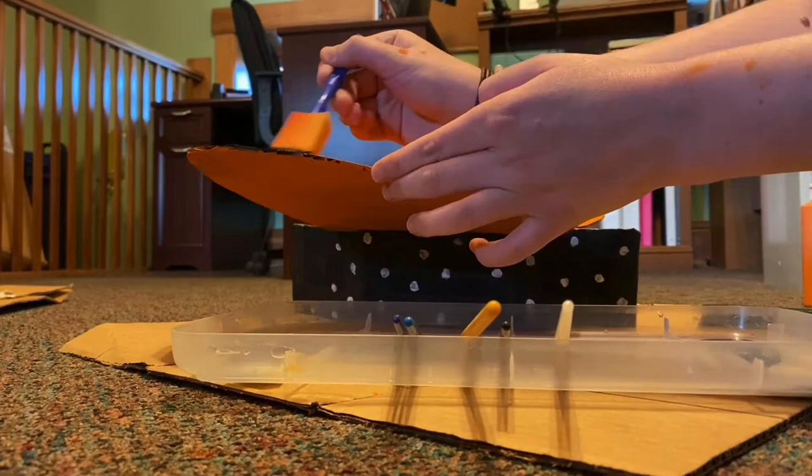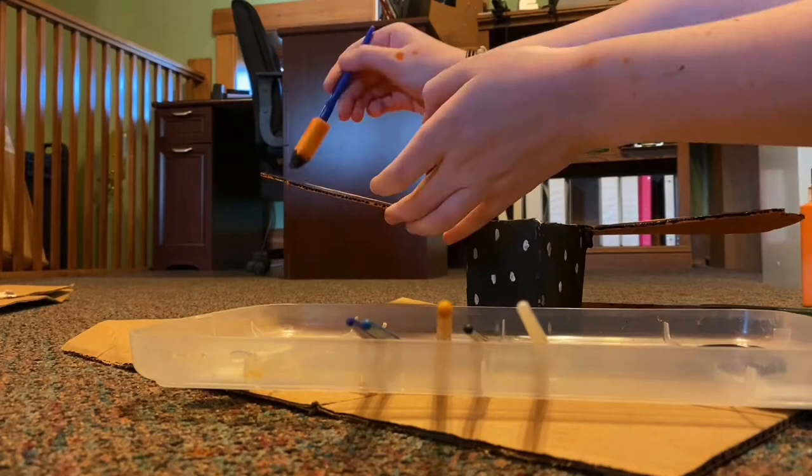Next I used black paint and started painting on the wings to get some of those wing details of the butterfly.